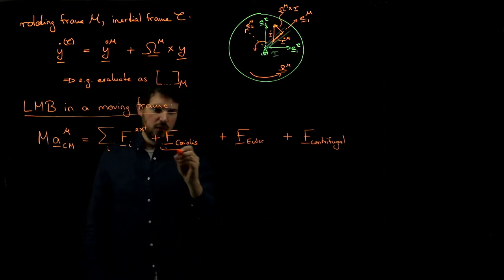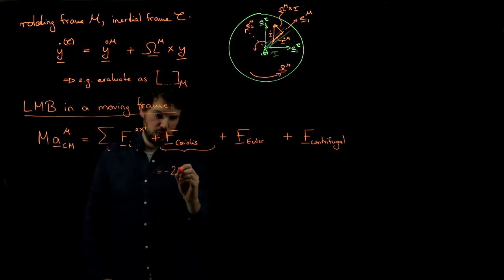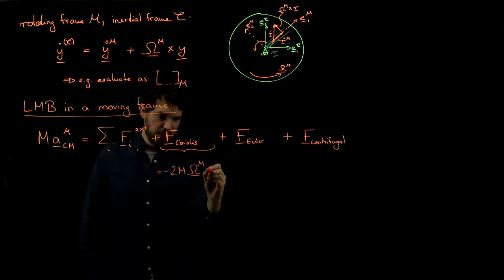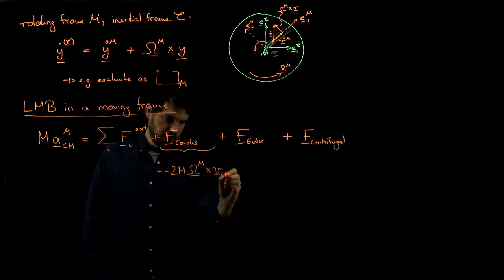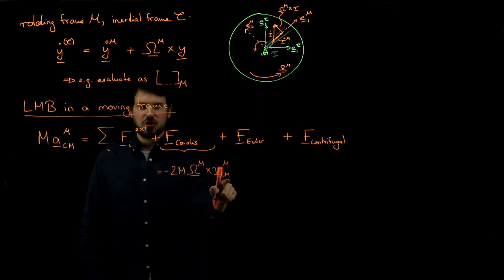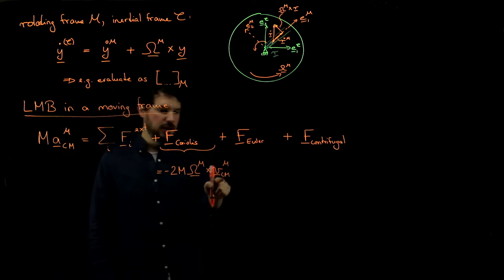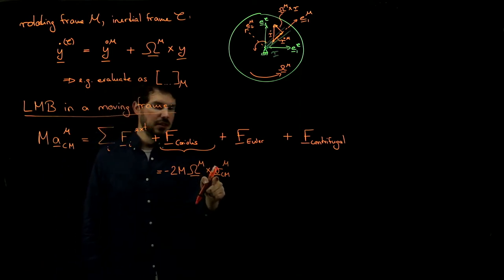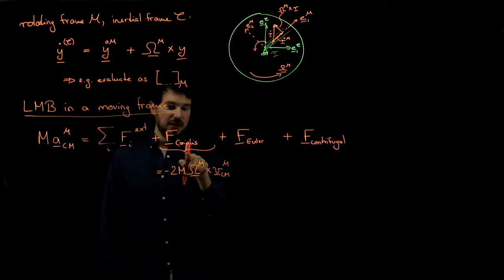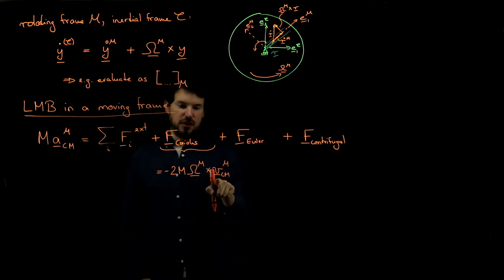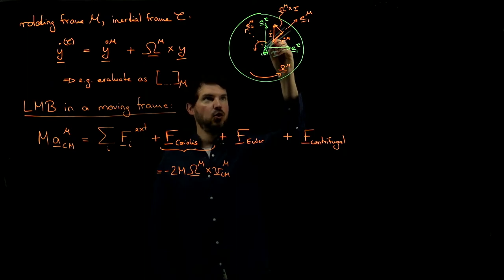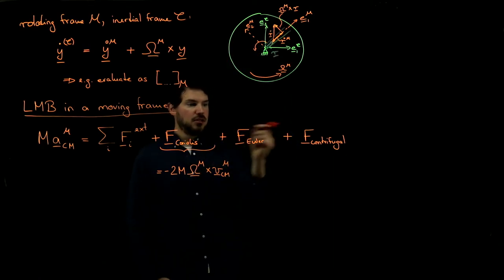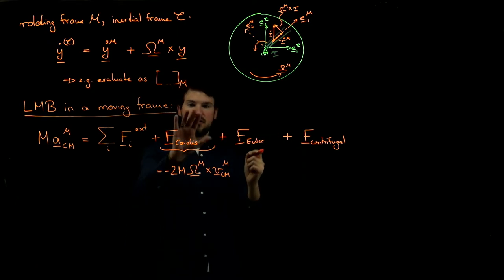In particular, there is the Coriolis force. We derived this as minus two times the mass of the particle, times the angular velocity of the frame cross the velocity of the particle as seen in the moving frame. This force only exists if there is relative motion in the moving frame. For example, if you glue your particle at a fixed distance so it's rotating but stationary relative to the rotating frame, there is no Coriolis force acting.